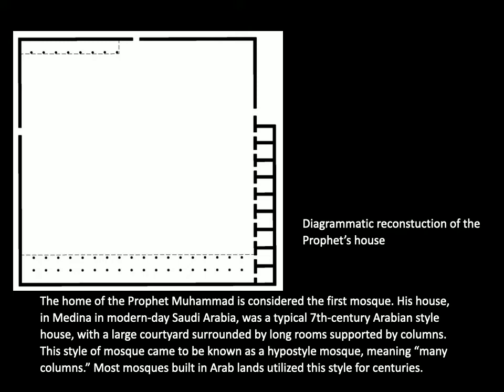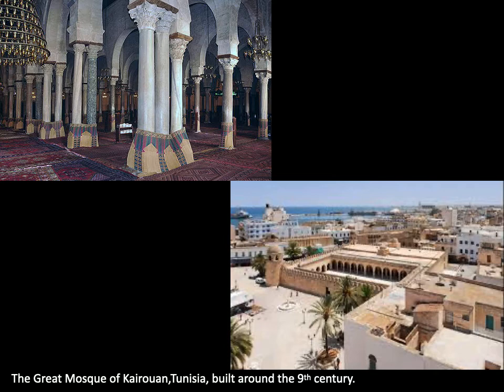This type of layout is essentially the opposite of the Malay Kampung house. When we compare to the Malay Kampung house that opened outwards into its surroundings, this is an enclosure — a house that turned inwards, unto itself. This style of mosque later came to be known as the hypostyle mosque, meaning many columns for the columns that line its long corridors. An example would be the great mosque of Kairouan in Tunisia, built around the 9th century.